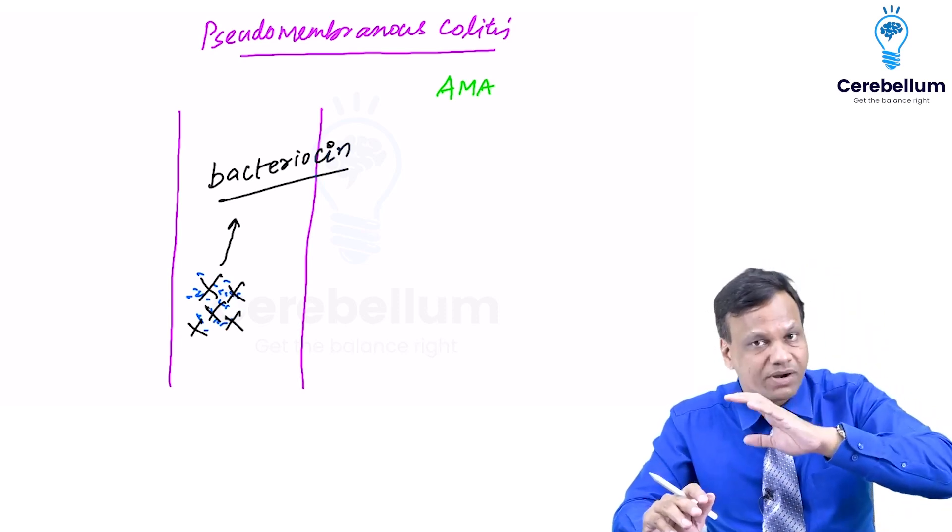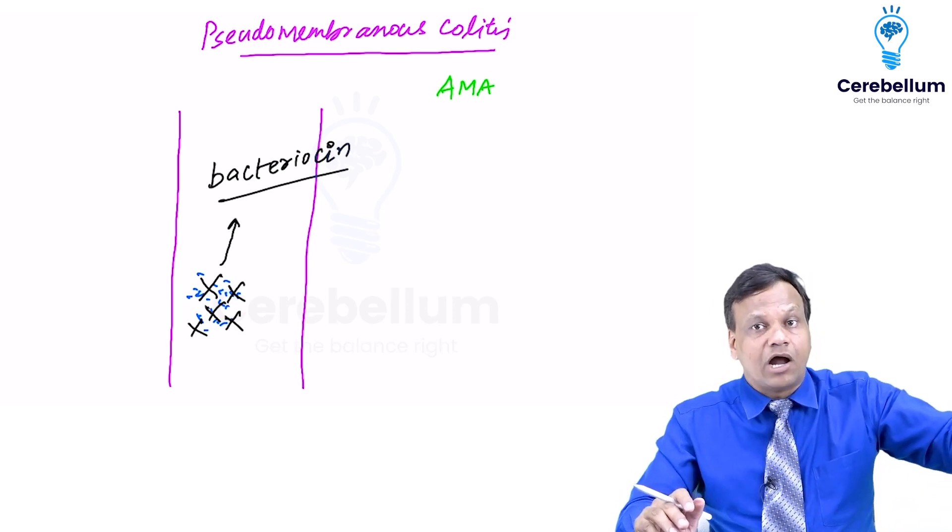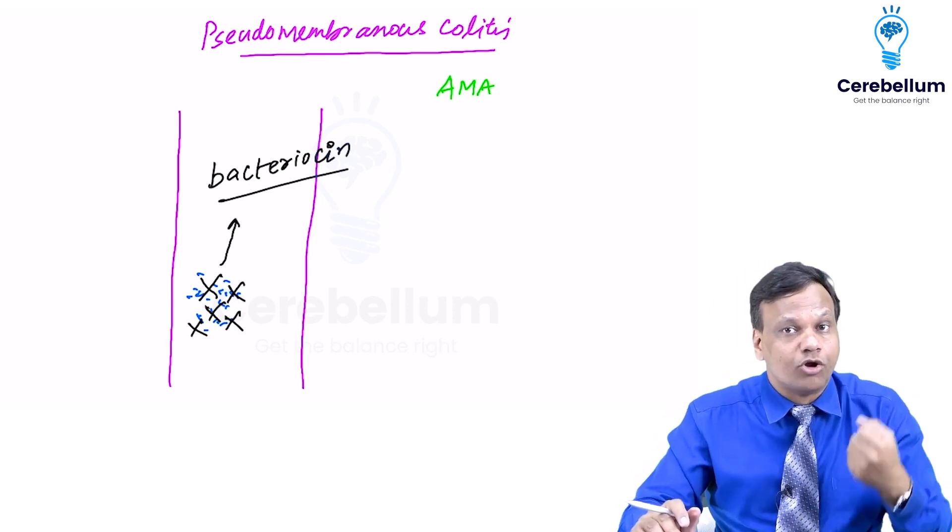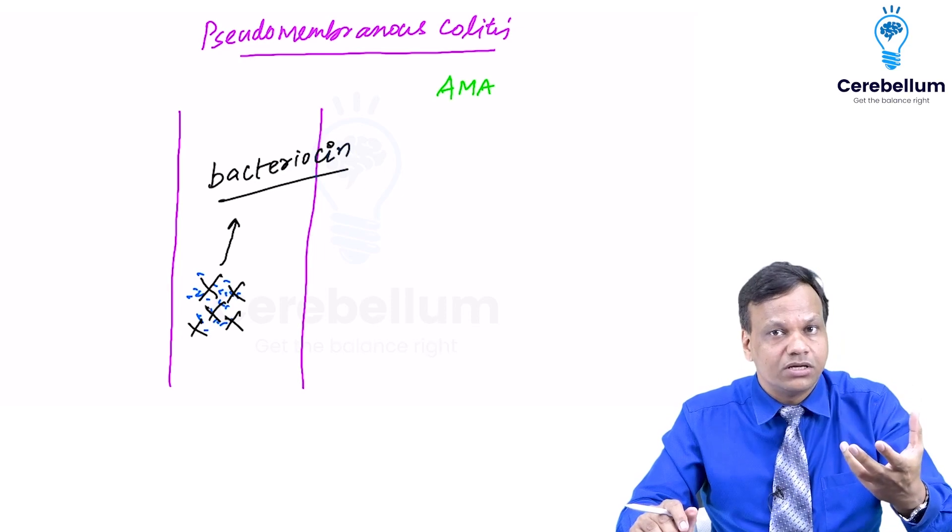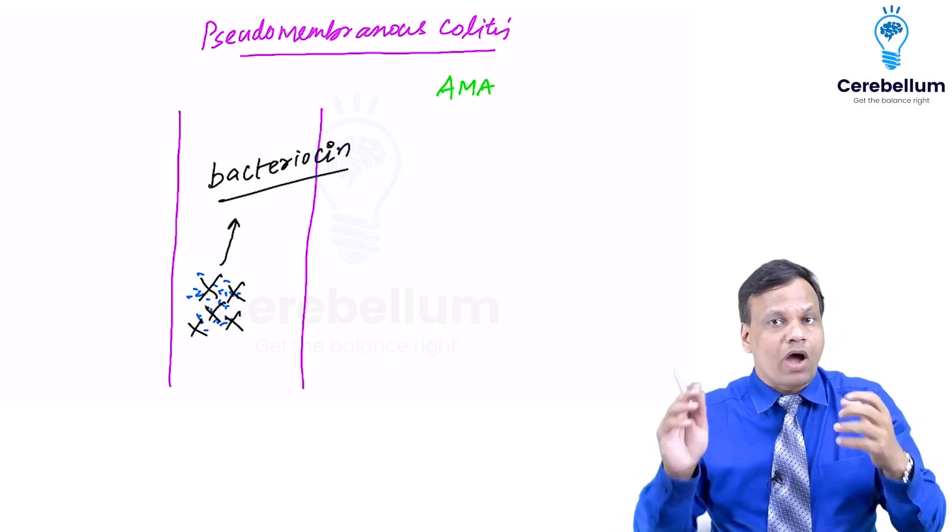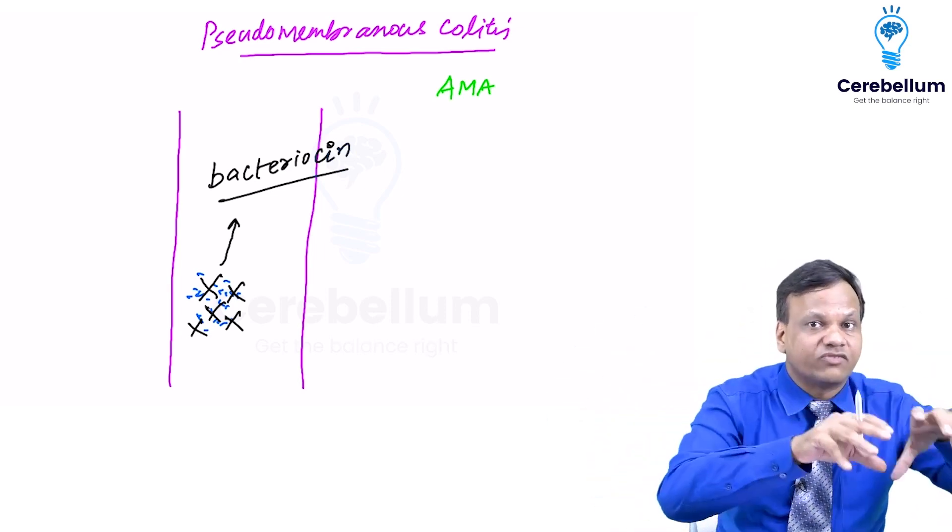So when the commensal bacteria has been killed means now there is no protection to GIT. No competition, no bacteriocin. So when there is no competition now any bacteria can come and start infecting the GIT.